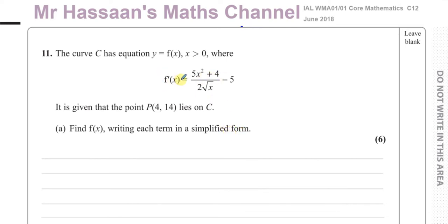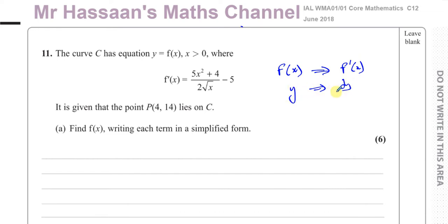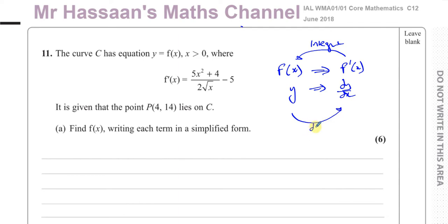What they've given us here is the gradient function — the derived function, the first derivative. If they give you something in the form of f of x, when you differentiate it you get f dash of x. dy/dx compared to y is the same as f dash of x compared to f of x. So if we want to go from the derivative back to the original function, we have to integrate. If we want to go from the original function to the derivative, we differentiate.